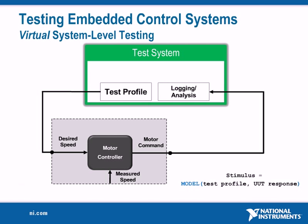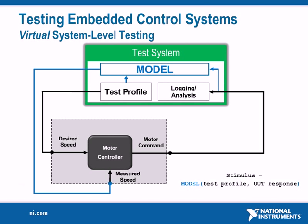Fortunately, we can use hardware-in-the-loop simulation to create a system-level test with only the embedded control device by creating a virtual system-level test. To do this, we'll use a model of our system that represents its response to the commands it will receive from our unit under test — the embedded controller. The model takes into account the response of our unit under test as well as the test profile to produce the next stimulus point. In this example, the model uses the motor commands and the load profile to generate the measured speed stimulus signal on the fly.